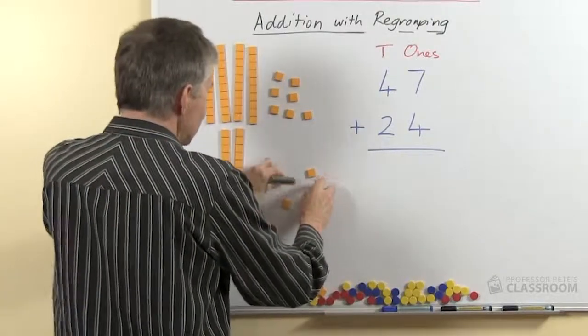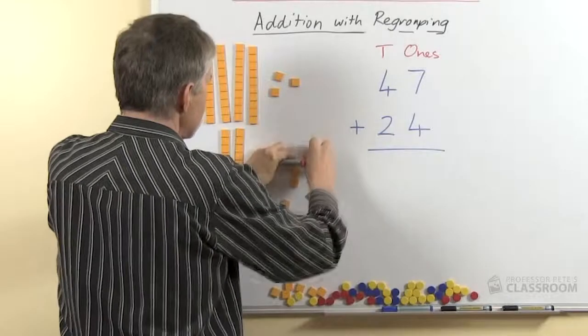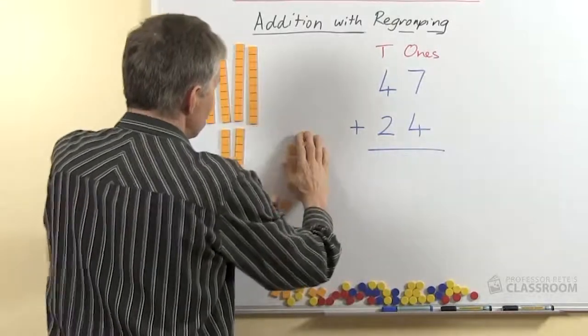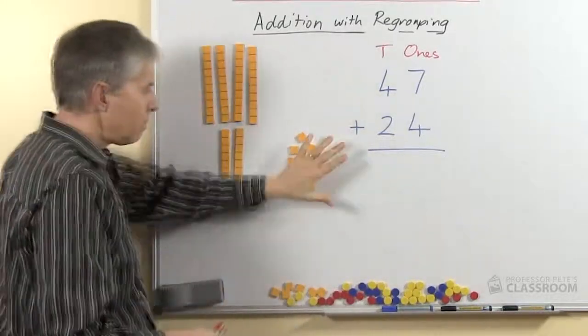So let's put all the ones together. There's 4 and 7 and we just push them all together like that. How many is that?